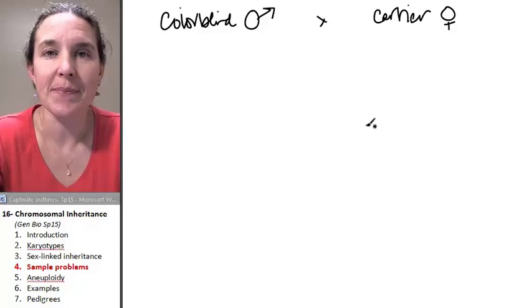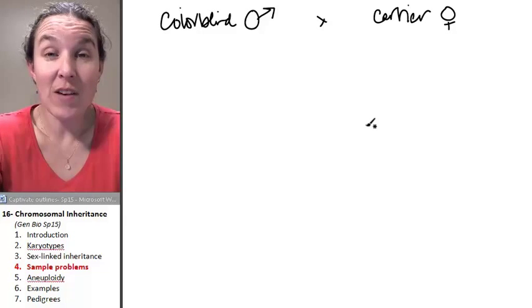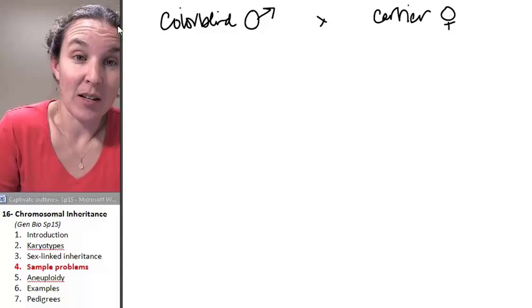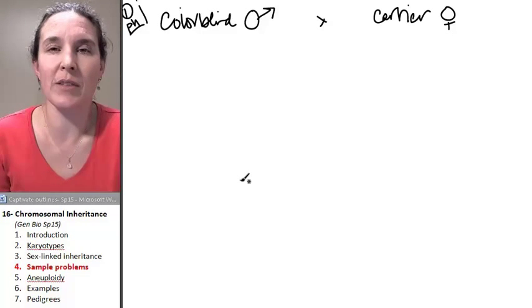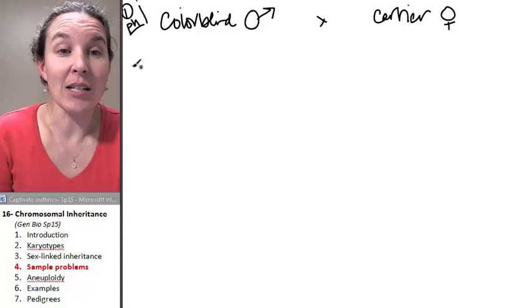So what are you going to do first? I've given you the phenotypes. So that part of your Punnett square problem solving toolkit, done. So what's the next step?